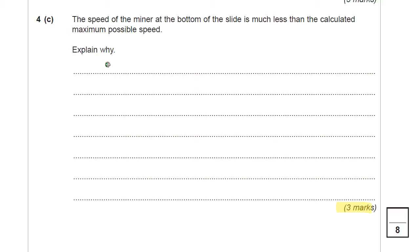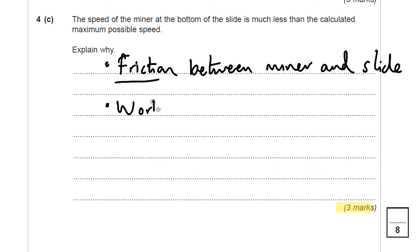Alright, now most people straight away say, well, I know why this is because in reality there's friction. Great. If you've got friction down on there, then you've got a mark already. There's friction between the miner and the slide. That's not good enough for 3 marks, is it? So, what else do you need to do? Well, that friction is a type of force. And it's a force over a certain distance. So, therefore, there is work done. Work is a type of energy which has been used mechanically. So, there's been a force over a distance. Work done is a force times a distance. So, therefore, energy has been used mechanically. This is the bit that people miss out.